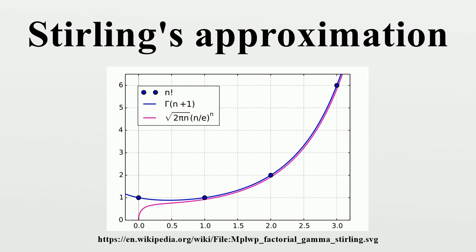For m equals 1, the formula gives a quantity a which can be found by taking the limit on both sides as n tends to infinity and using Wallis's product, which shows the value of a. Therefore, we get Stirling's formula.